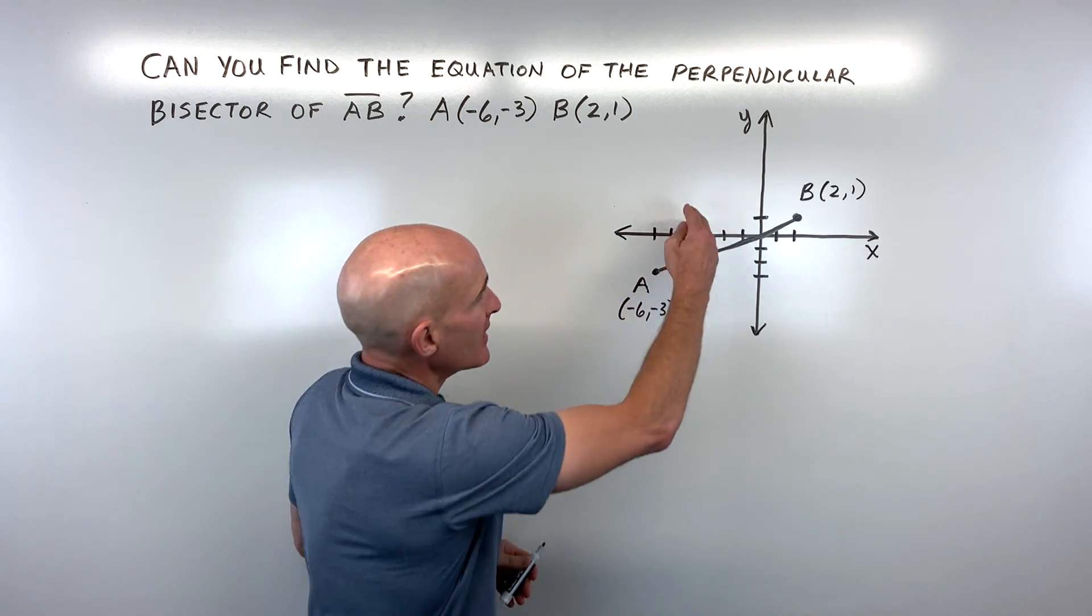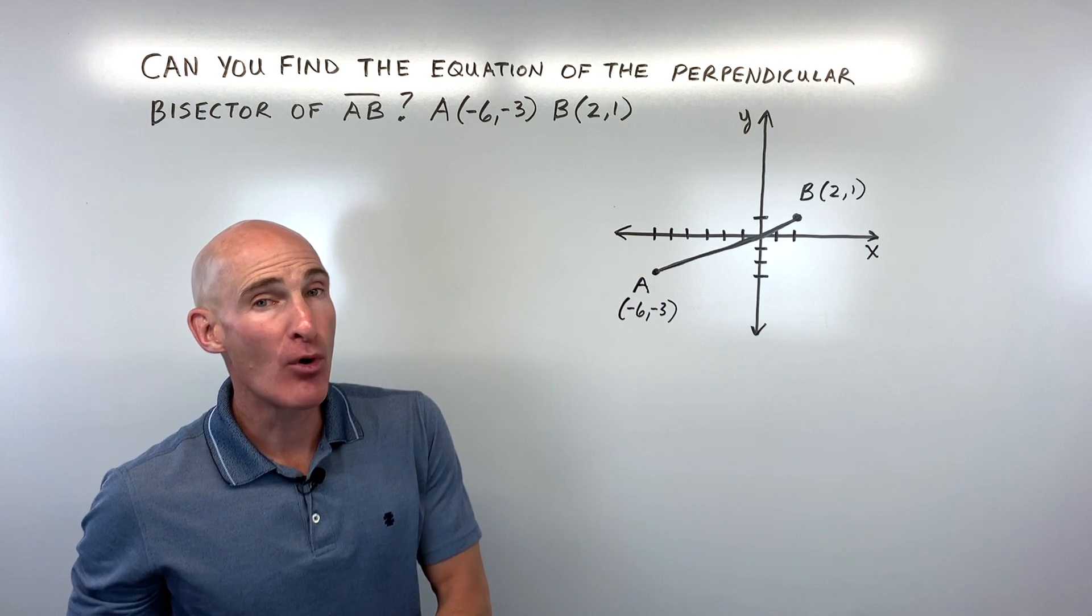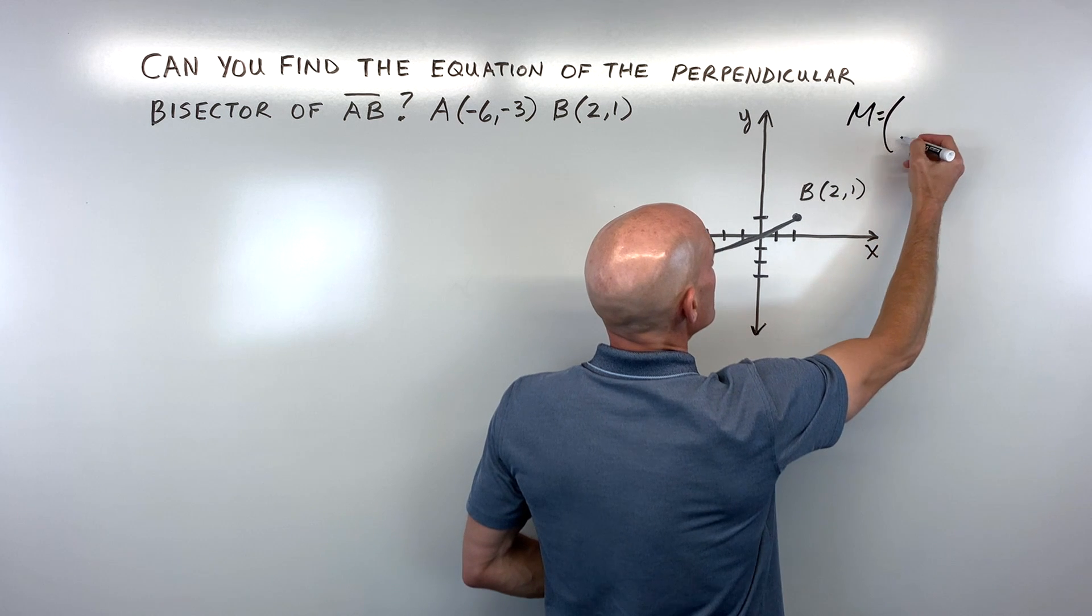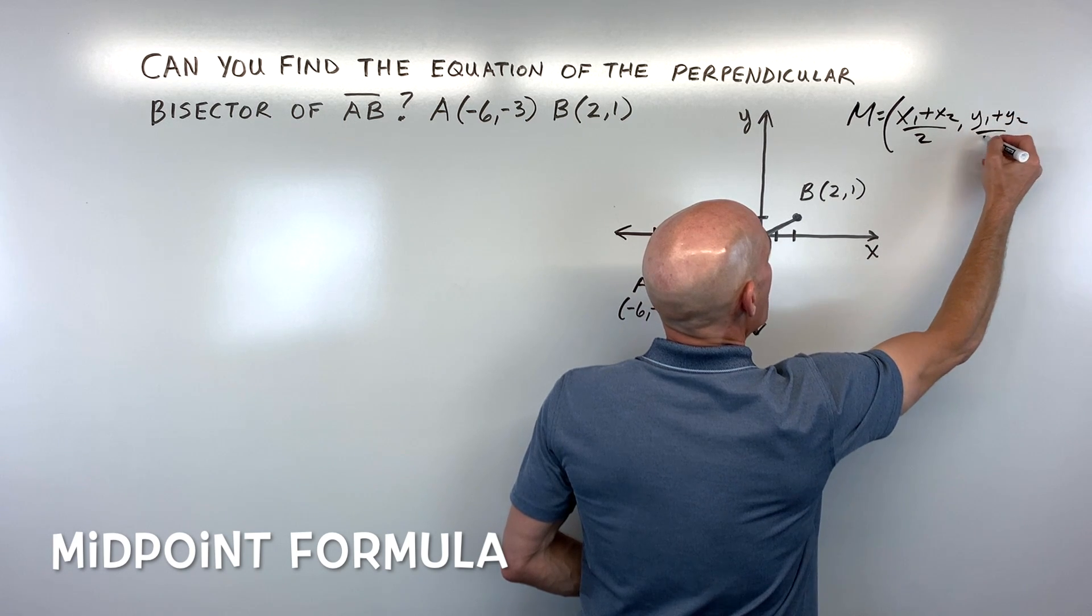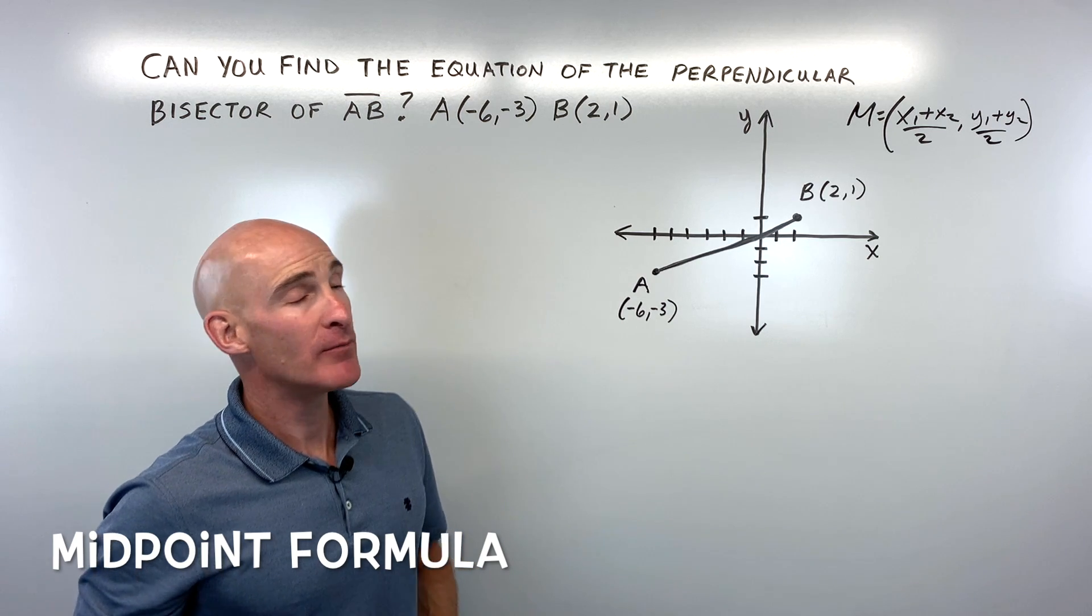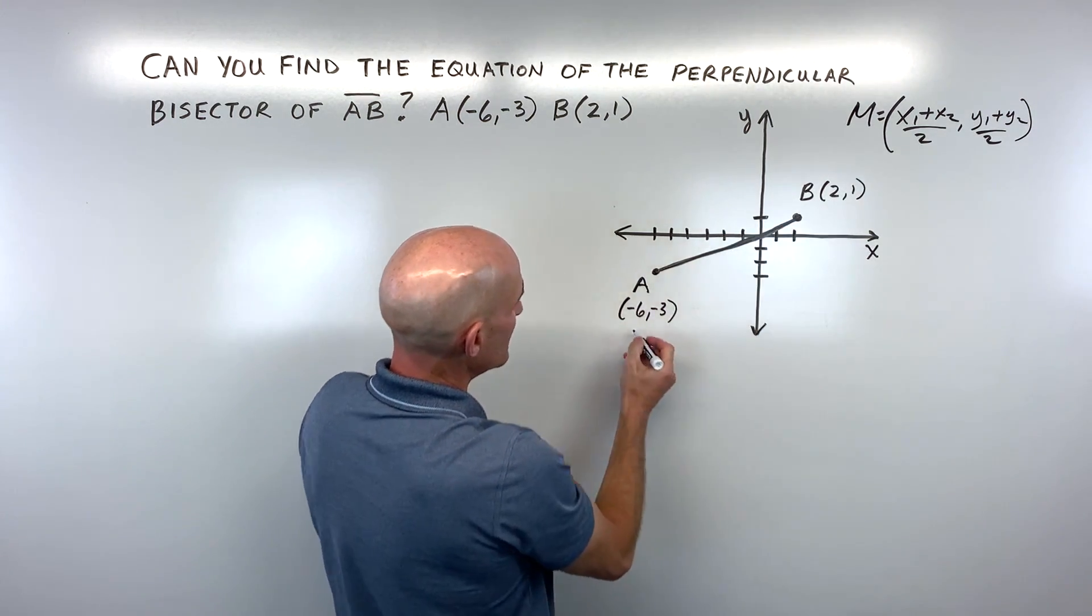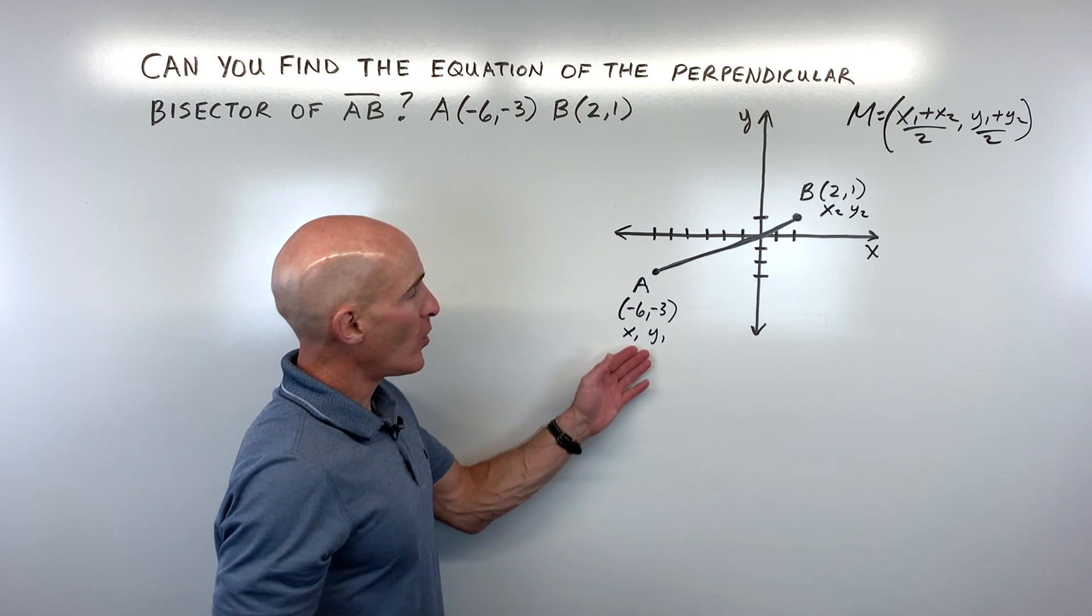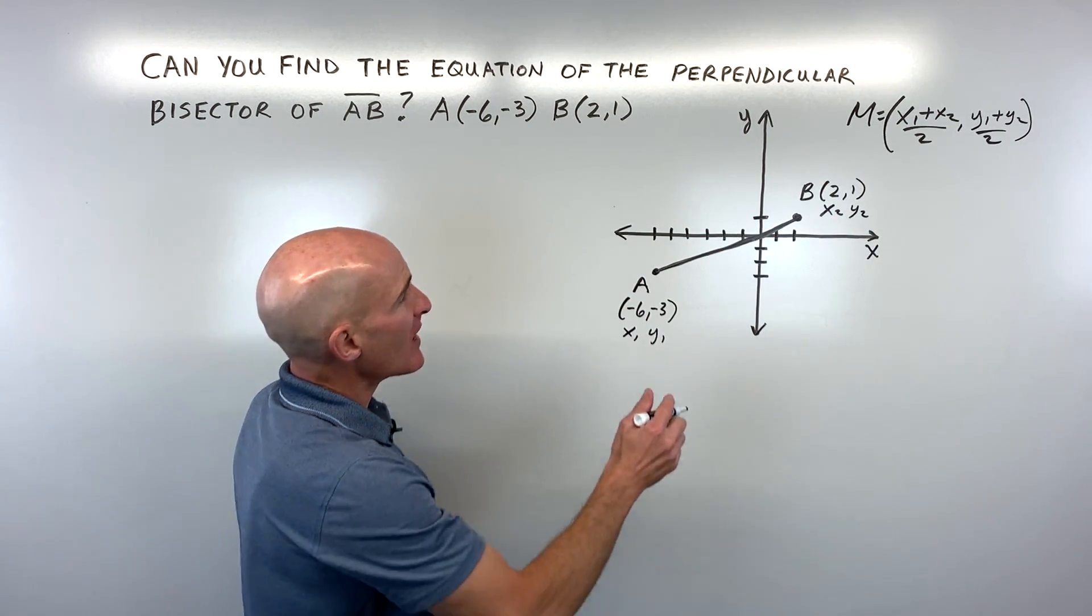The bisector means that it's cutting this segment in half, which means that it has to go through the midpoint. So one of the formulas that you're going to want to know is this midpoint formula right here. It's the average of the x values and the average of the y values. So we're taking x1 plus x2 divided by 2 and y1 plus y2 divided by 2. You're using these endpoints and you can think of this as like x1, y1 and this point over here as x2, y2. The 1 just means point number 1 and the 2 just represents point number 2.